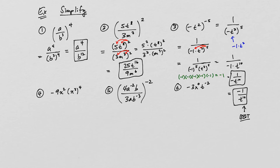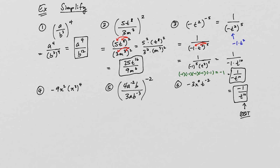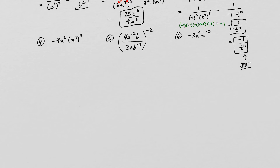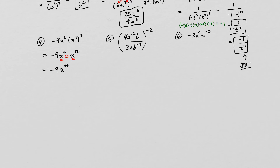For number four, we have negative 9x squared multiplied by (x to the third) quantity to the fourth. We do the parentheses first, so this is negative 9x squared multiplied by x to the 3 times 4, which is 12. Then we have a common base in multiplication, so we add those exponents: this becomes negative 9 times x to the 2 plus 12, which is negative 9x to the 14.